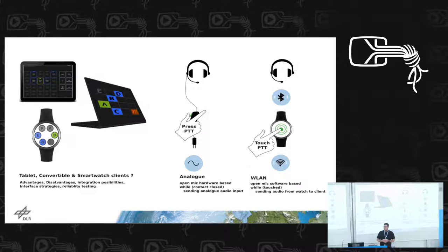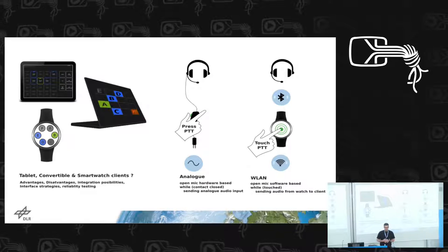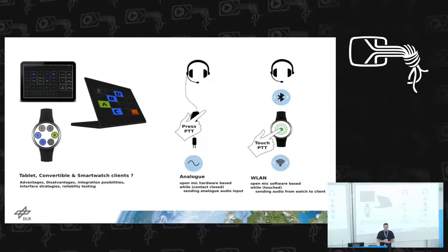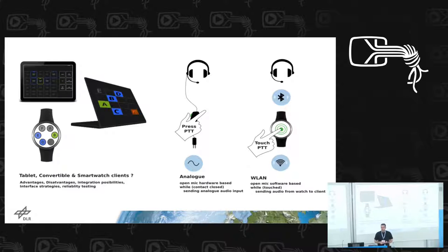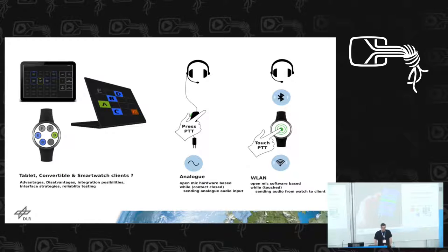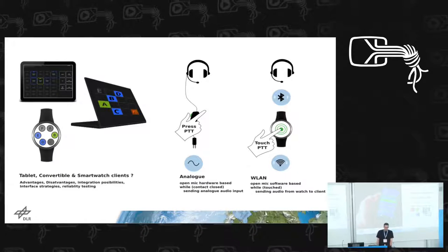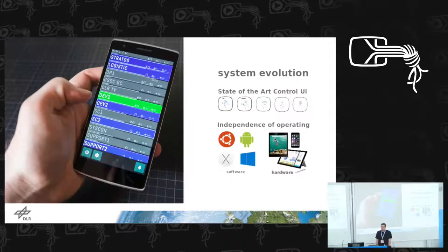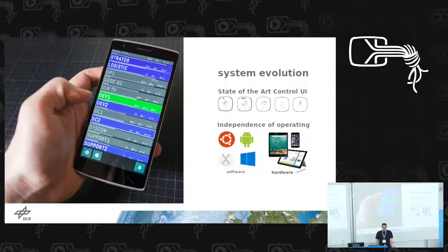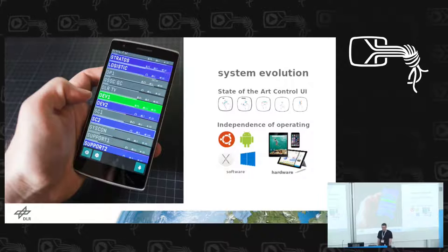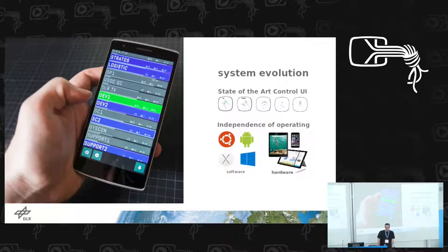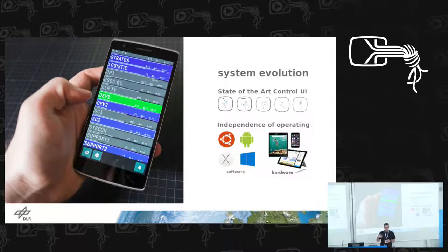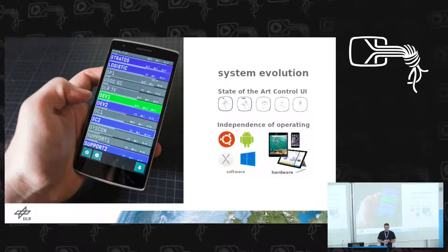That's why we created the OpenVox protocol specification. We are also trying to change the push-to-talk from an analog button press to pressing on a smartwatch, and using the smartwatch as the push-to-talk device. We are going for a system evolution which is open, enables state-of-the-art user interactions, and is independent - not just from a vendor, but also from the operating system and the hardware. That's the design approach, and that's why I said it's not just a software development process - it's a system design process.